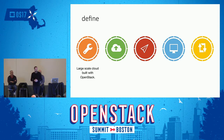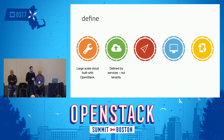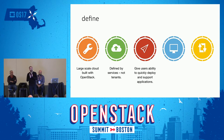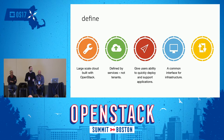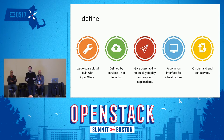When we talk about VCP, we like to define it as a large-scale cloud. It's built with OpenStack. It's defined by the services, not the tenants. This is kind of a mind shift for some of the different types of NFV-style clouds we're seeing built. We have to serve multiple customers with this cloud. The services are the products that we have. We need to give our users the ability to quickly deploy and support their applications. It's a common interface for infrastructure across our entire organization — multiple lines of business we're supporting. On-demand and self-service, so we want to support the ability to quickly come and do things in an attended and unattended manner.